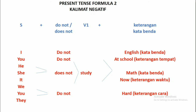Yang kedua, present tense formula kalimat negatif: subject plus do not atau does not plus kata kerja pertama plus kata keterangan. I do not study English. You do not study hard. She does not study math. He does not study now. We do not study hard. They do not study English. Bisa dibulak-balik ini ya.